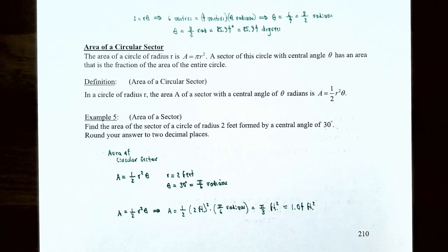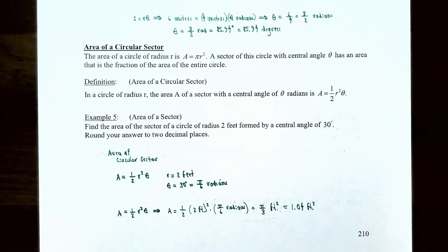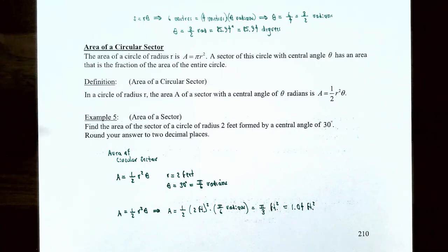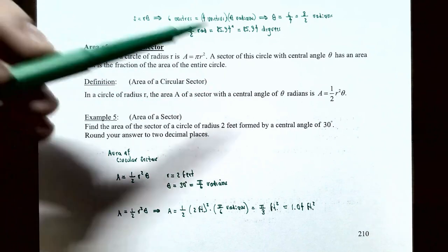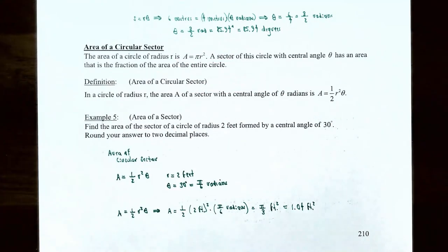Now let's talk about the area of a circular sector. The area of a circle of radius r is pi r squared. The sector with central angle theta has an area that is a fraction of the total circle area. The definition: if a circle has radius r, the area A of the sector with central angle theta in radians is A equals one half times r squared times theta.